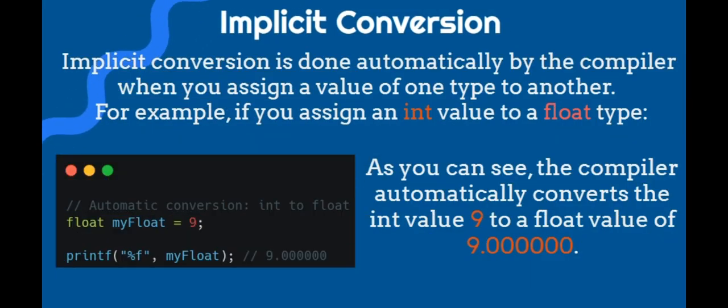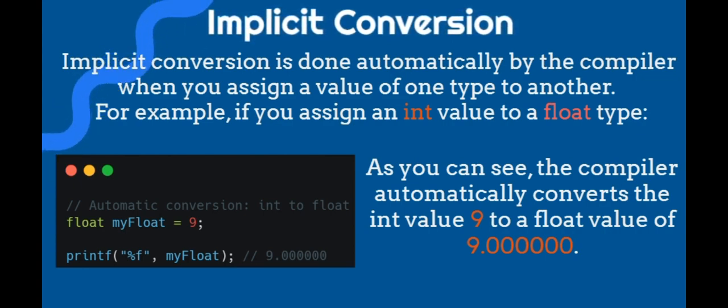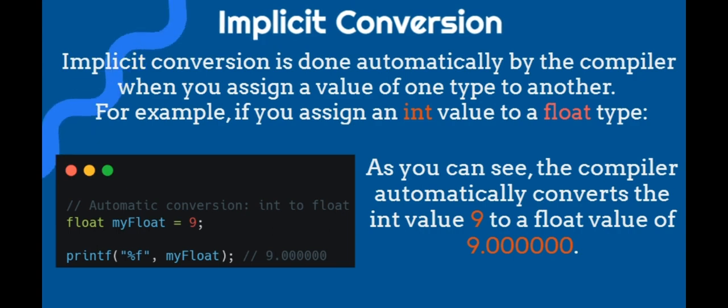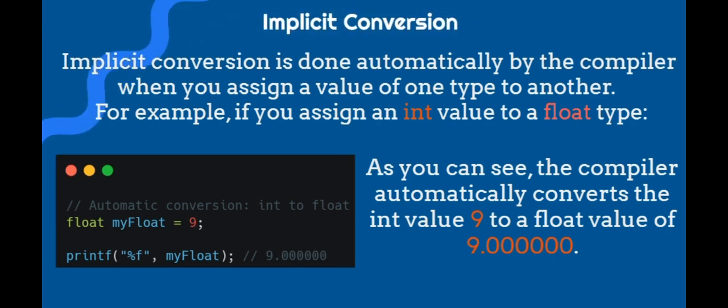First, implicit conversion. Implicit conversion is done automatically by the compiler when you assign a value of one type to another. For example, if you assign an int value to a float type. As you can see, the compiler automatically converts the int value 9 to a float value of 9.000000.